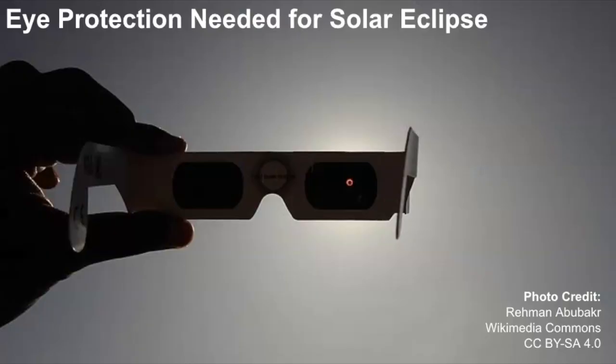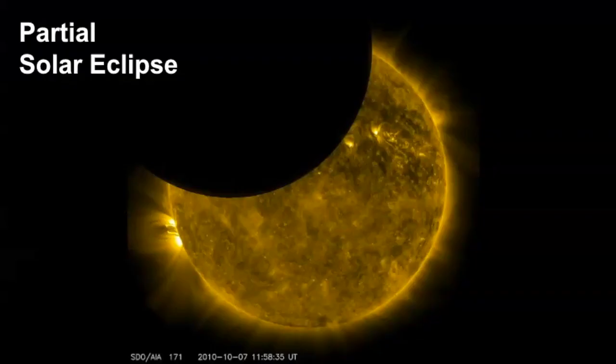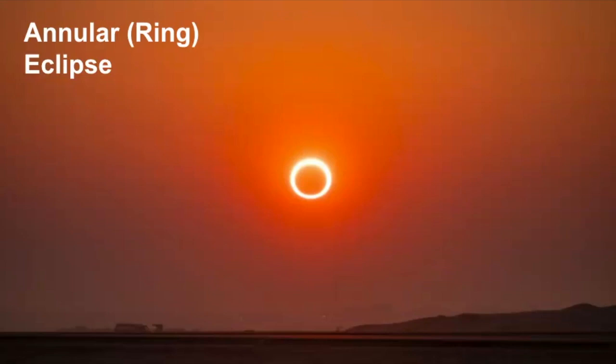Keep in mind that you do need eye protection for a solar eclipse. You should never look directly at the sun. There's also different types of solar eclipse as well. There's a partial solar eclipse, and that's when the moon only partially blocks part of the sun's disk. And then you also have an annular eclipse. This is also called a ring eclipse, and this is when the moon is too far away to completely cover the sun's disk. And this is actually going to happen in 2021.